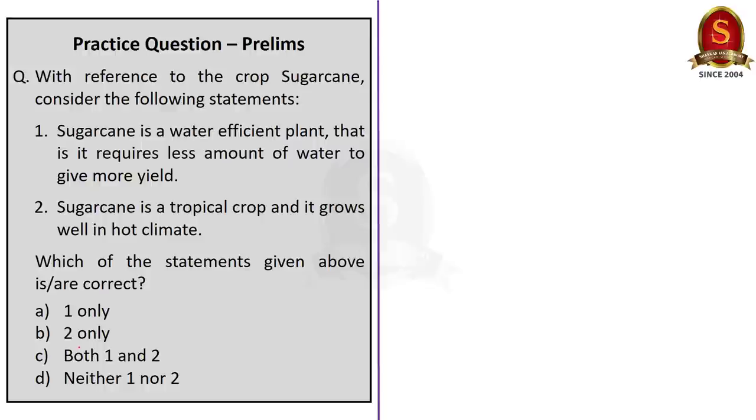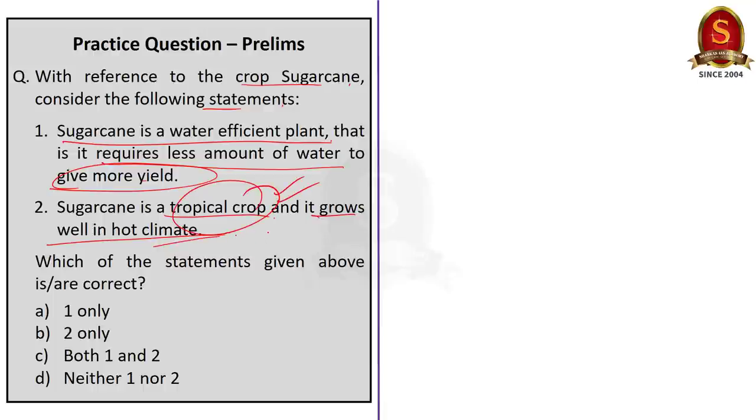This is our final question. With reference to the crop sugarcane consider the following statements. Sugarcane is a water efficient plant that is it requires less amount of water to give more yield. And the statement two is sugarcane is a tropical crop and it grows well in hot climate. Yes friends we have seen that sugarcane is a tropical crop and it grows well in hot and humid climate with the temperature of 21 degree celsius to 27 degree celsius. And it is a sun loving plant. So statement two is correct. Statement one is absolutely incorrect because it is a water inefficient crop. It requires 75 centimeter to 100 centimeter of rainfall for the growth. And we have seen that one ton of sugarcane needs about 60 to 70 tons of water. So statement one is false. Our answer is option B two only.